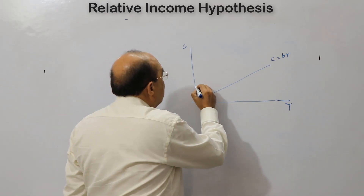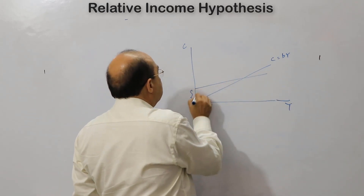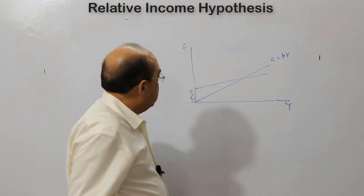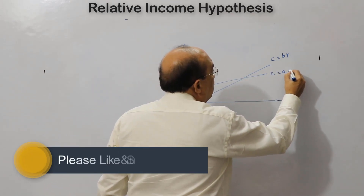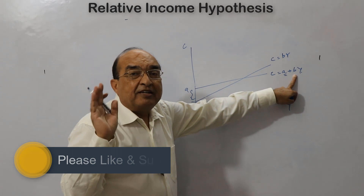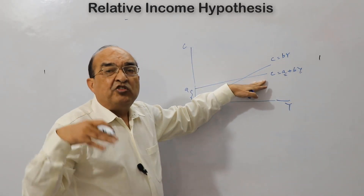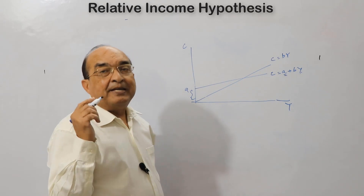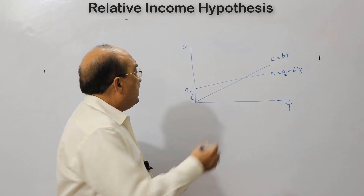But when the consumption function was obtained from cross-sectional family budget data, a different type of consumption function was found — one with an intercept: C equals A plus BY, where A is the constant intercept and B is the marginal propensity to consume. In this case, marginal propensity to consume is different from average propensity to consume, and MPC is less than APC.